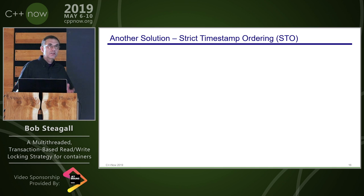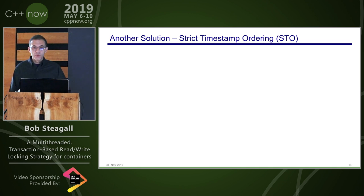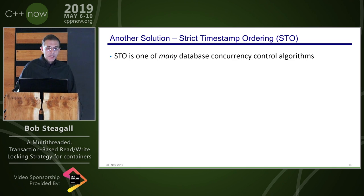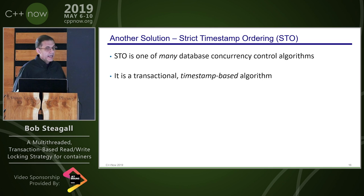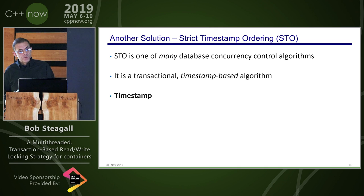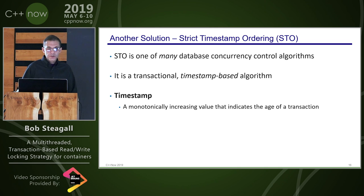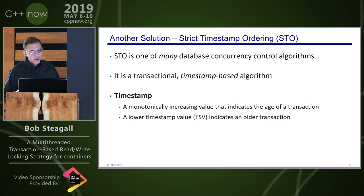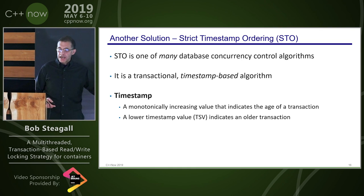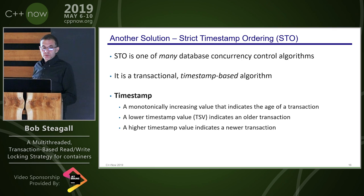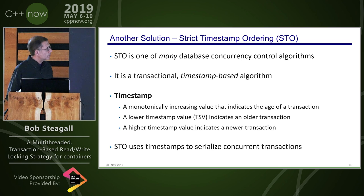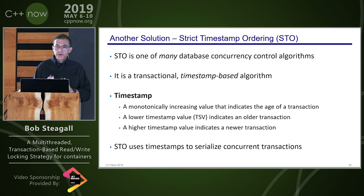Having some experience with this, I did research into database concurrency algorithms and came across an approach very well suited to this problem: strict timestamp ordering (STO). It is one of many database concurrency control algorithms — the only one I'll discuss. It is transactional and timestamp-based. A timestamp is a monotonically increasing integer indicating the age of a transaction. A lower timestamp value indicates an older transaction; a higher value indicates a newer transaction. STO uses timestamps to serialize concurrent transactions.